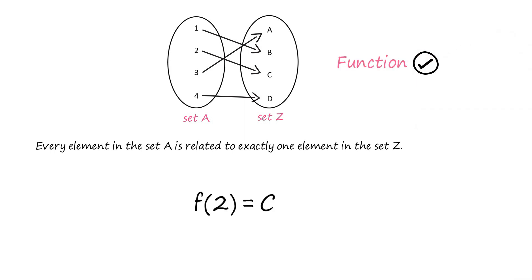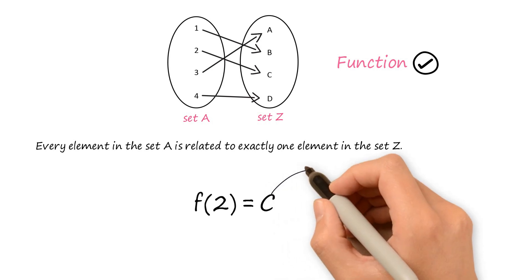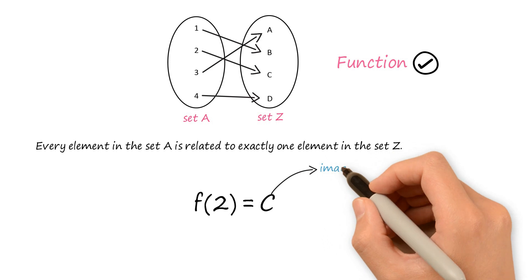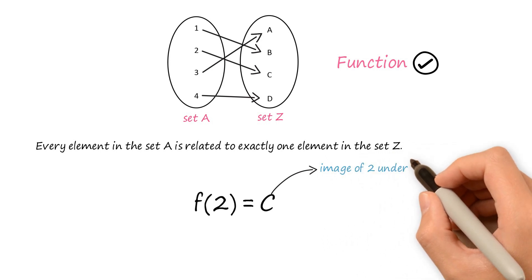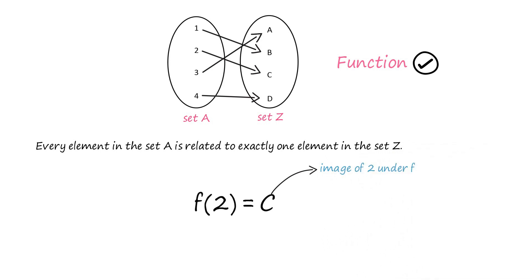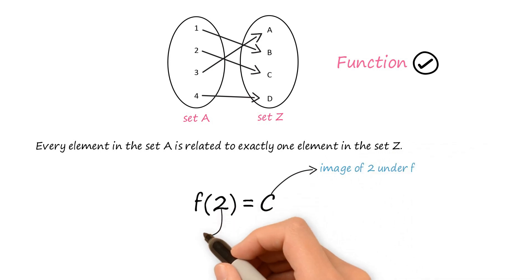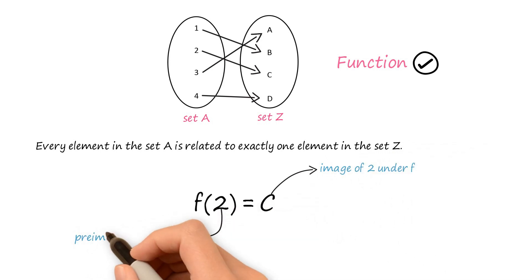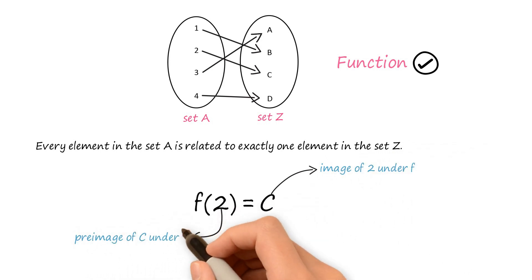The element 2 in the input set is assigned the element C from the output set. Here, C is called the image of 2 under F. And 2 is called the pre-image of C under F.